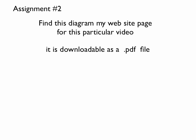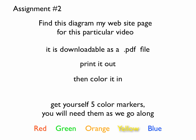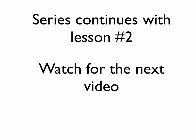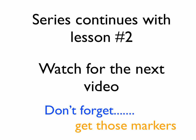Here's your next assignment. Find this diagram on my website for this particular video. I'll post these videos on my website. And with each one, I'm going to post the blank diagram so that you can color it in. It will be downloaded as a PDF file, printed out, and then color it in. Go get yourself five colored markers. You're going to need them as we go along. Don't forget to do this. Our series is going to continue with lesson number two. Watch for it in the next video. And don't forget, go get those markers.